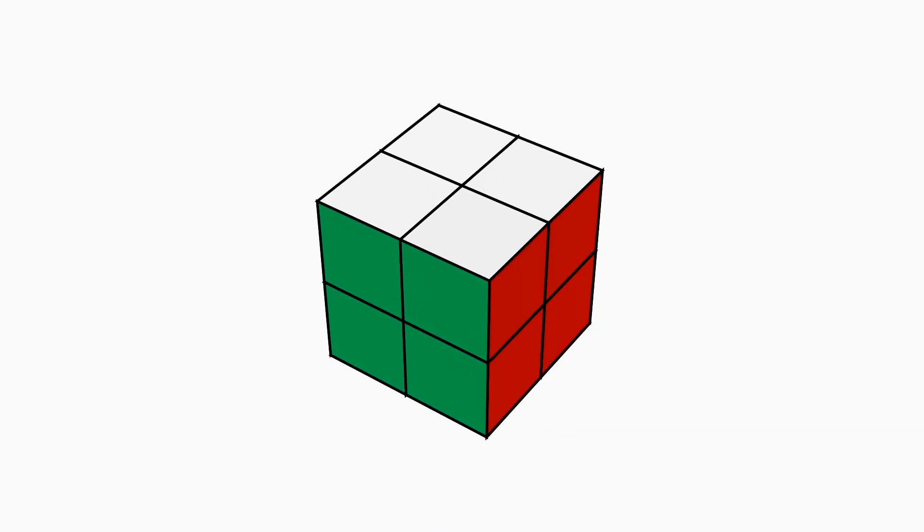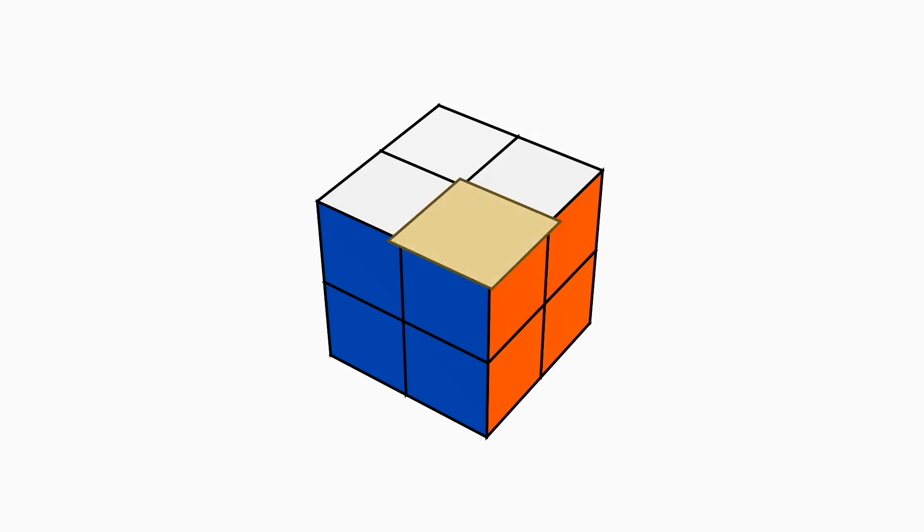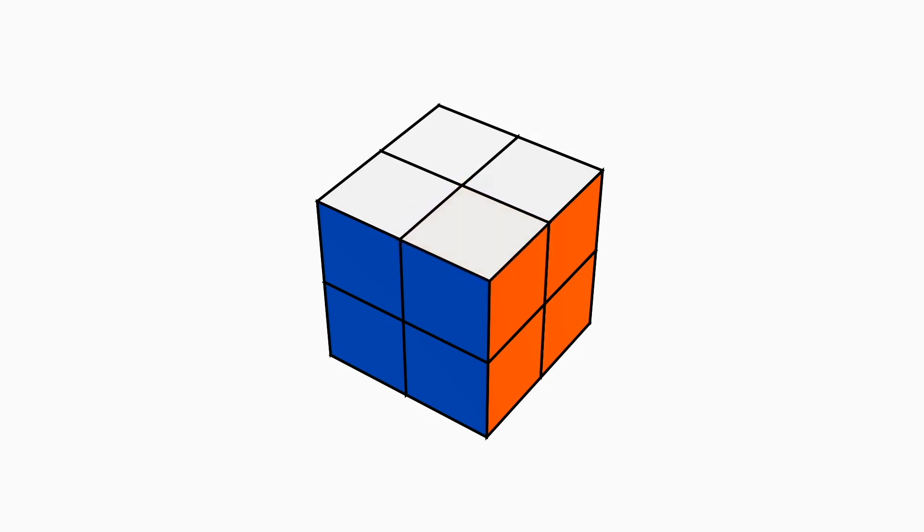The nice thing about the old Pacman method is that you only need to know one sequence of turns, or algorithm, to be able to solve the corners. This algorithm will let us swap the pieces in two corner positions from a specific orientation. The first position being swapped is where the white, blue, and orange piece is when the cube is solved, from the white sticker.